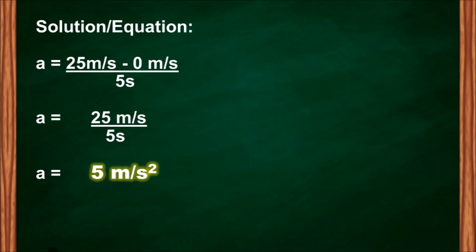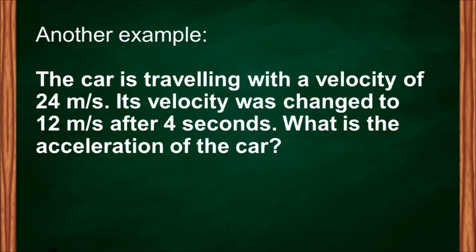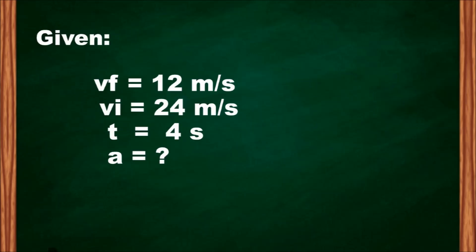Let's try another problem. A car is traveling with a velocity of 24 meters per second; its velocity was changed to 12 meters per second after 4 seconds. What is the acceleration of the car? Analyze the problem and identify the data: final velocity is 12 meters per second, initial velocity is 24 meters per second, and time is 4 seconds.